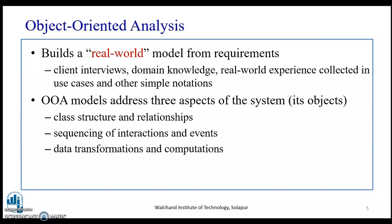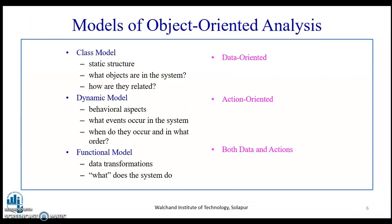The object-oriented analysis model addresses three aspects of the system: class structure and relationship, sequencing of interaction and events, and data transformation and computation. Primarily, it tries to understand what the object does, what it interacts with, and in what order.